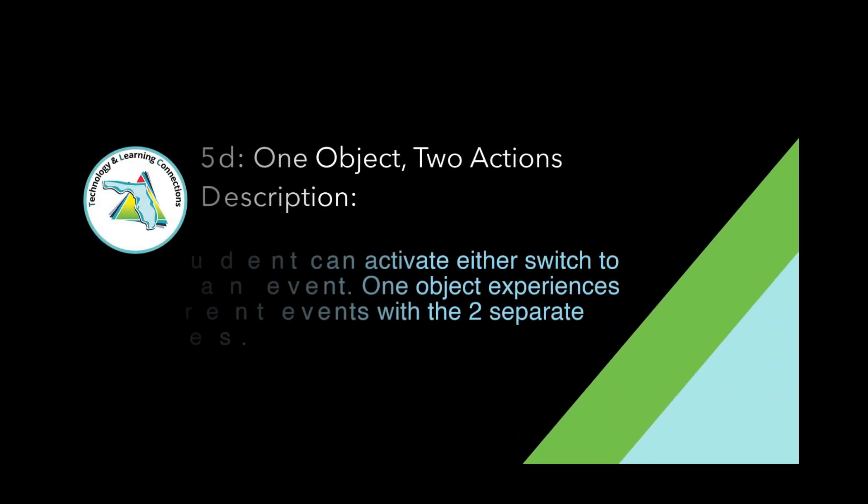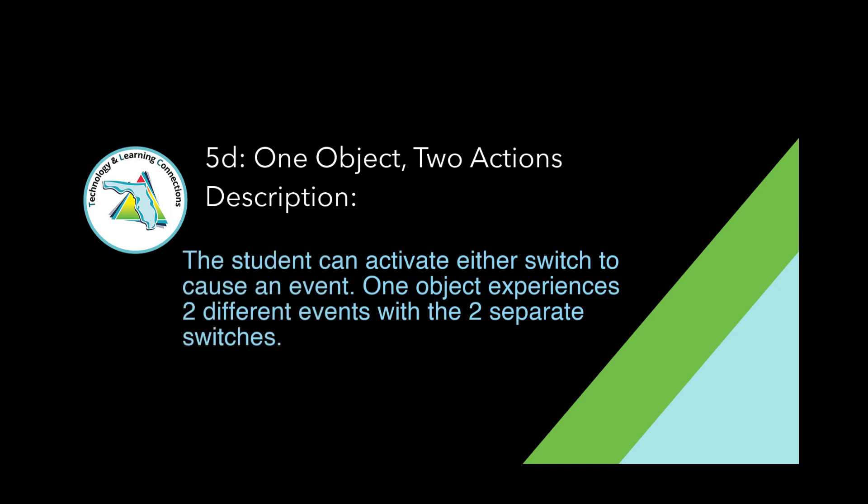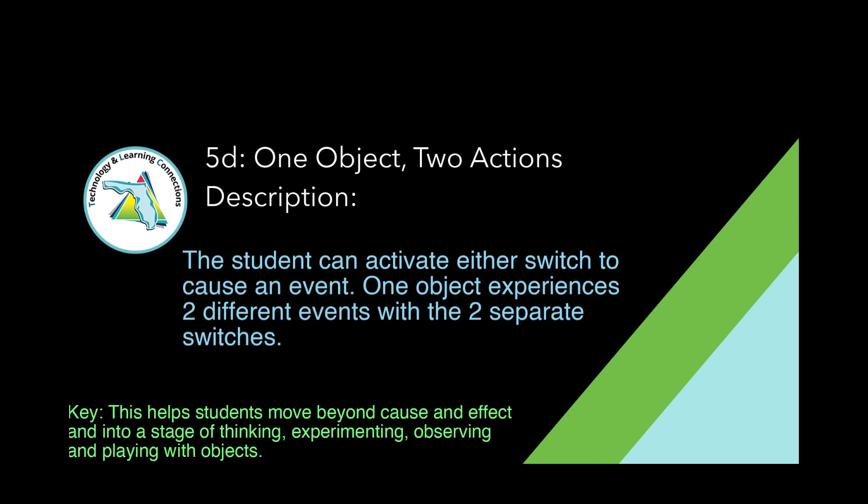On our Level 5D, One Object, Two Actions, we are able to see that a student can activate either switch to cause an event. One object experiences two different events with the two separate switches.